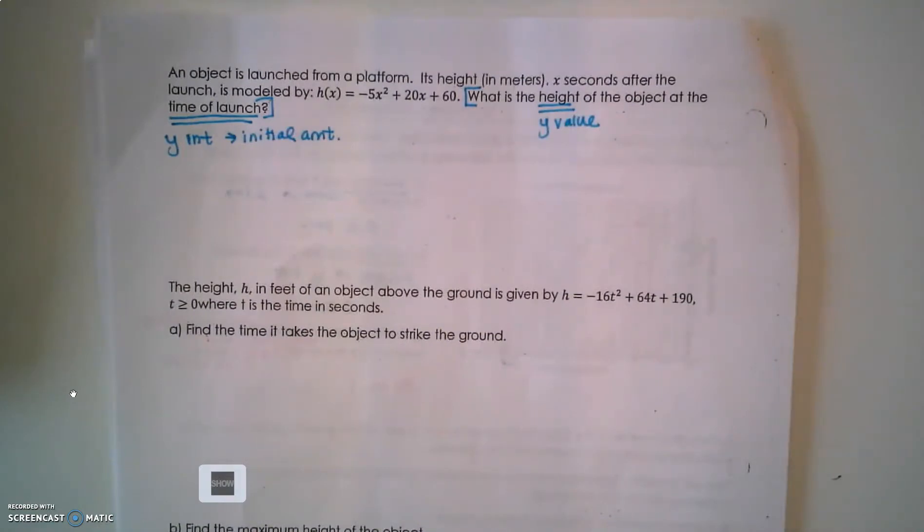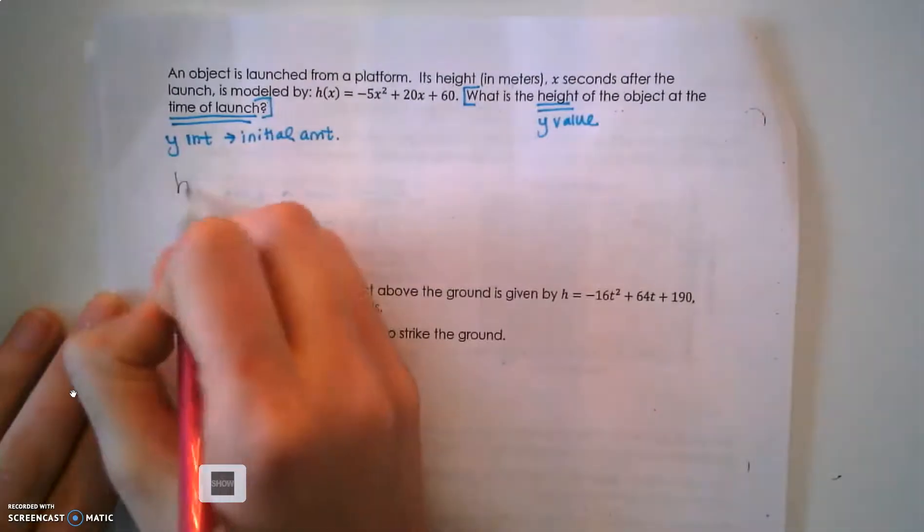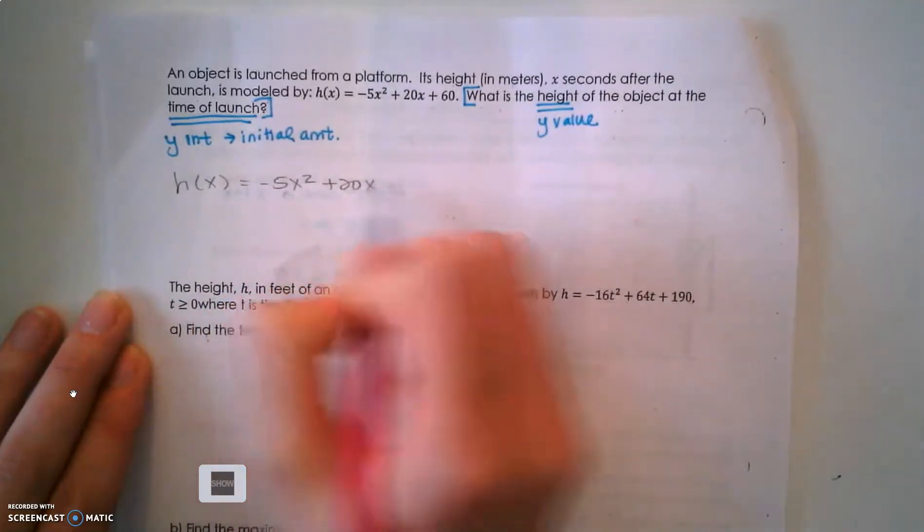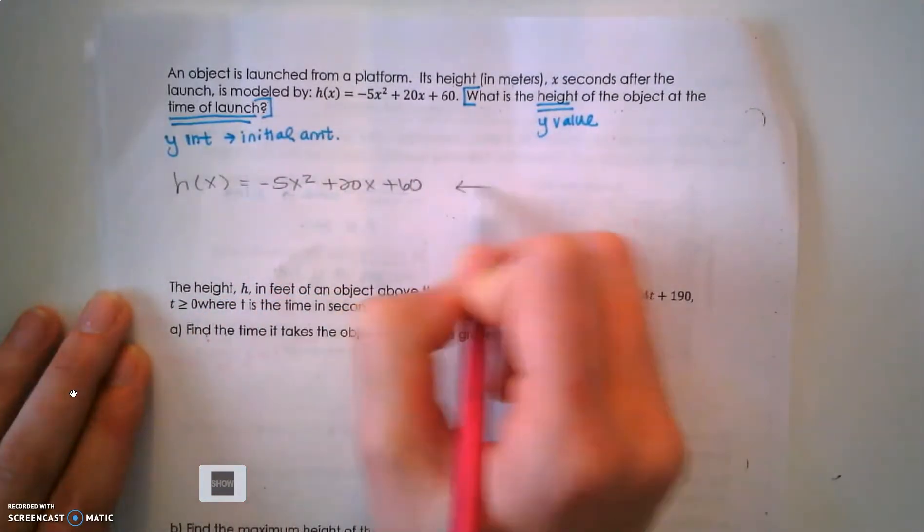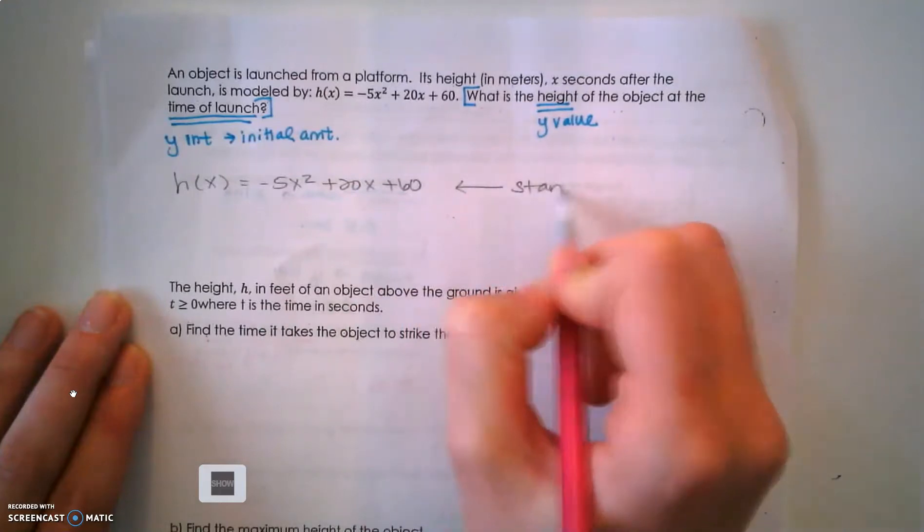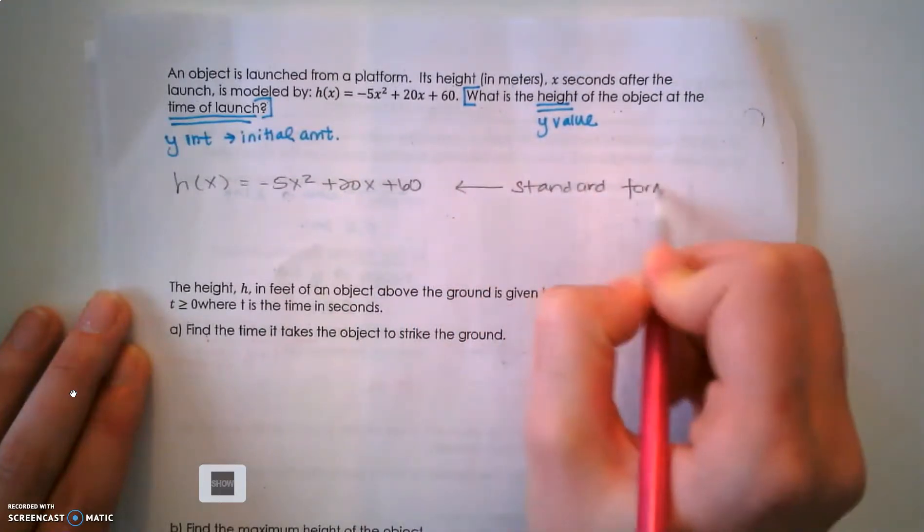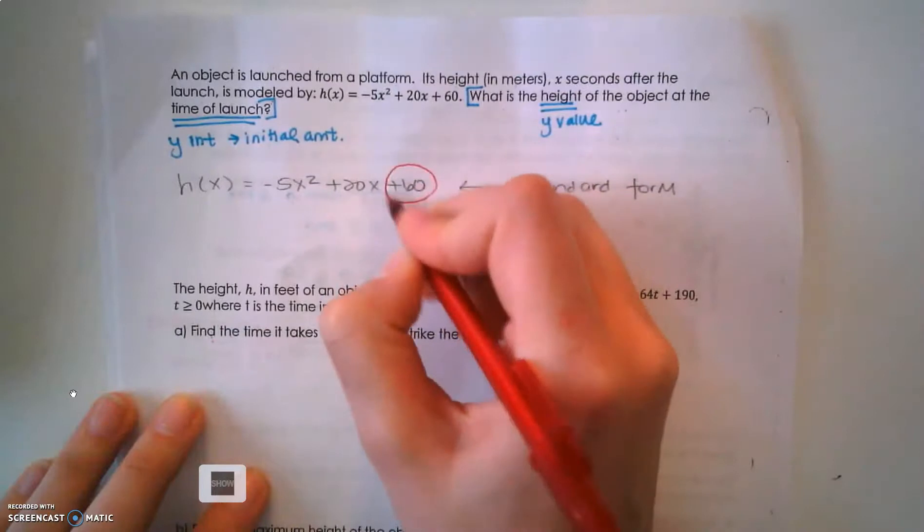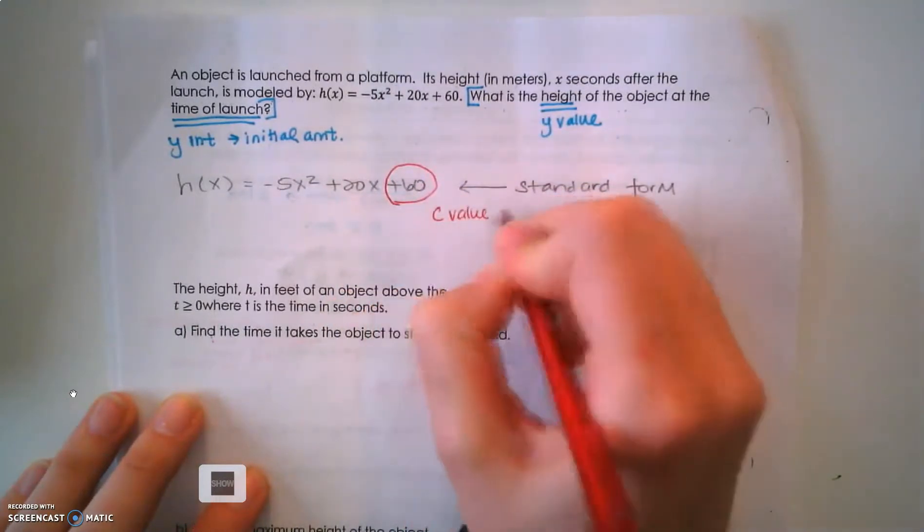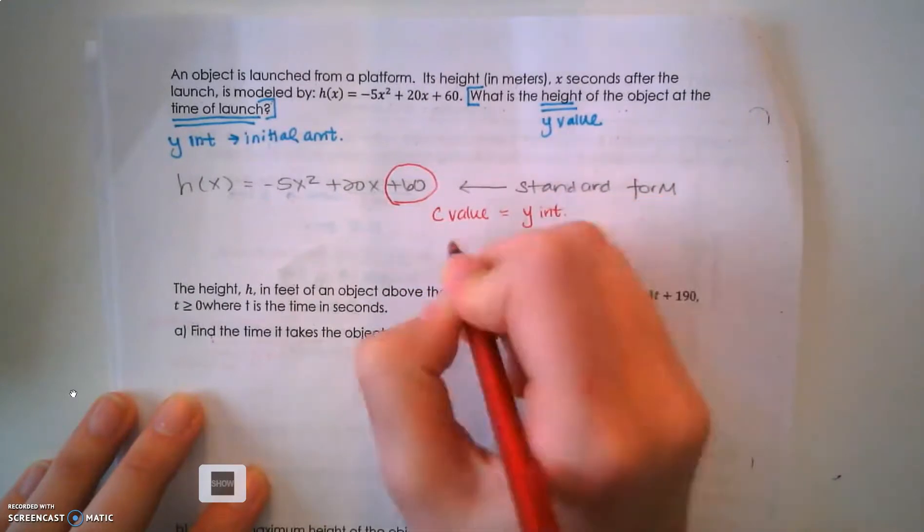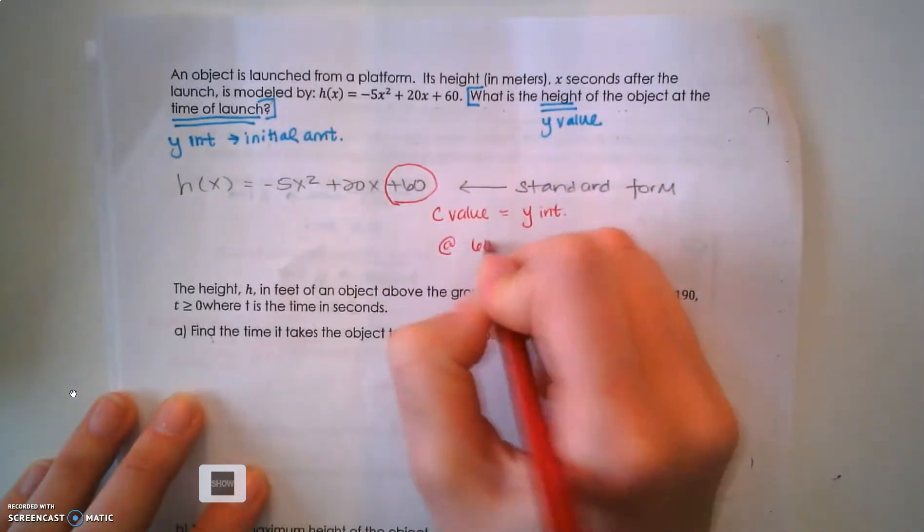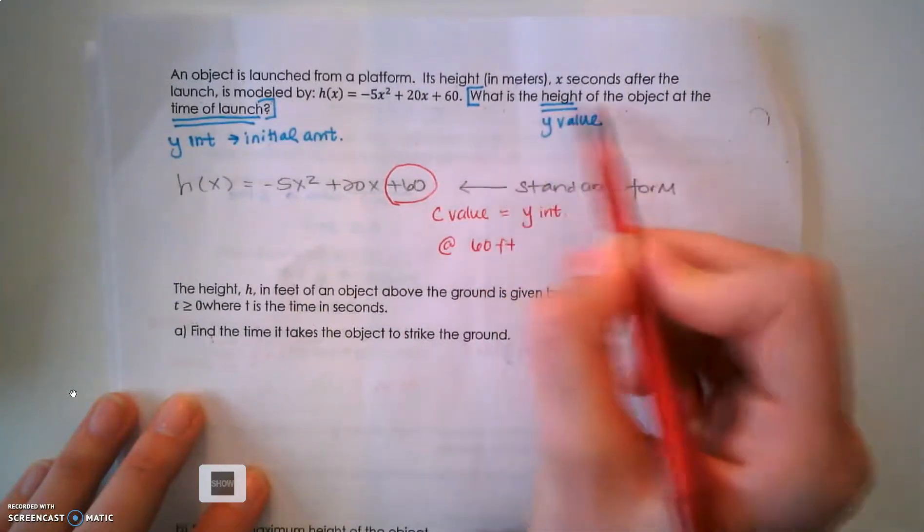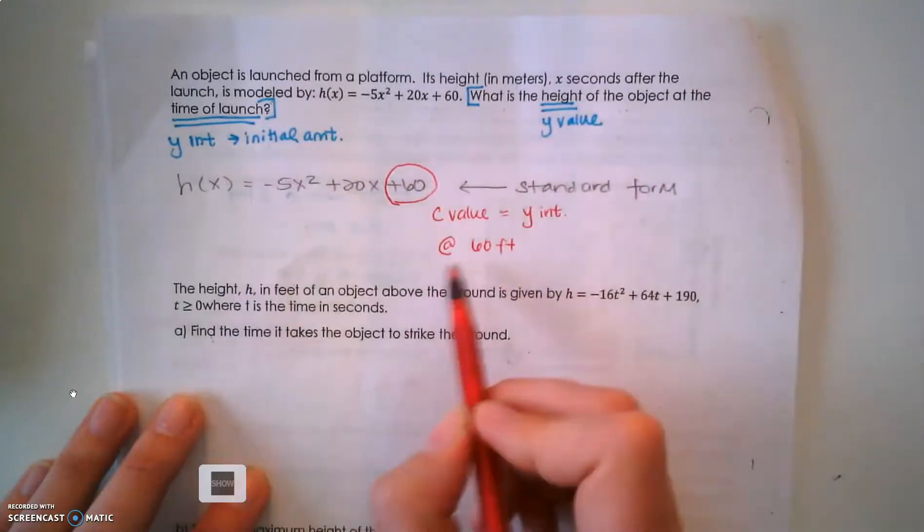They've given us h of x equals negative 5x squared plus 20x plus 60. That's a standard form equation of a line. In a standard form equation, this is my y-intercept - the c value equals my y-intercept. So at 60 feet is the height of the object at the time of launch.